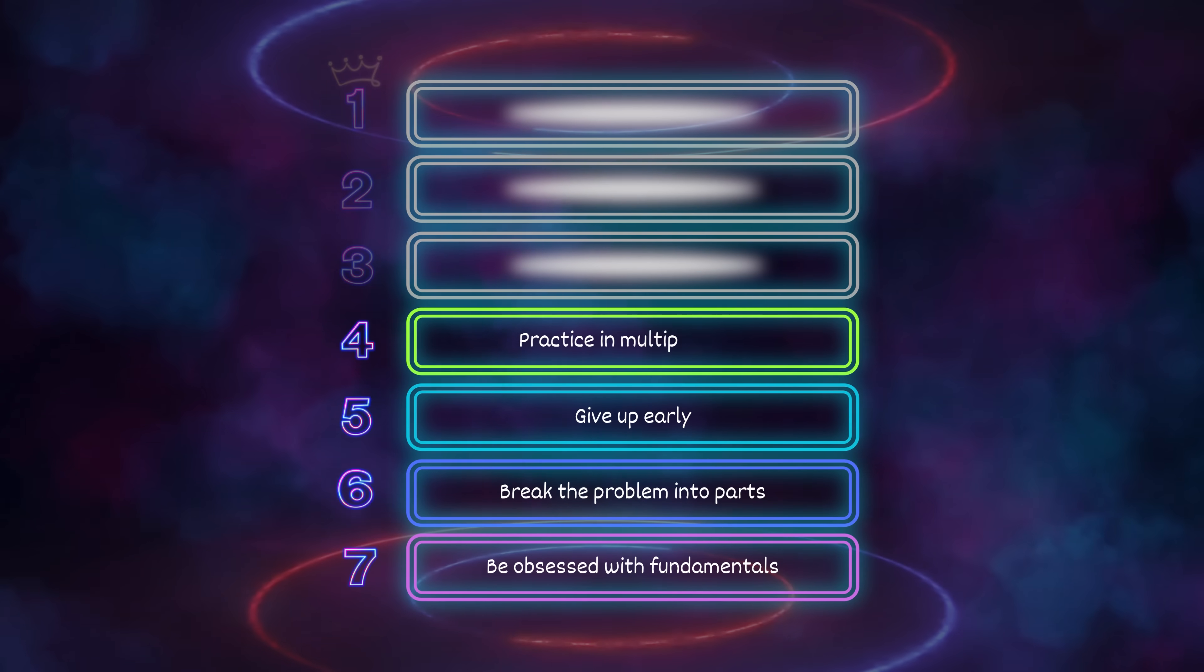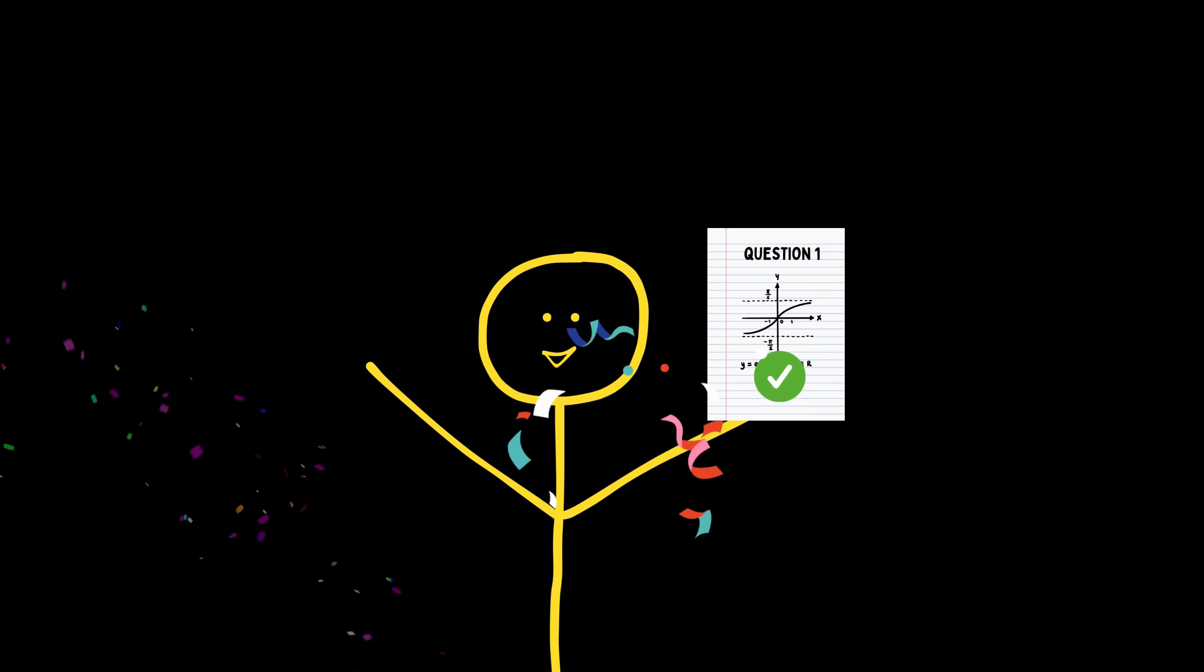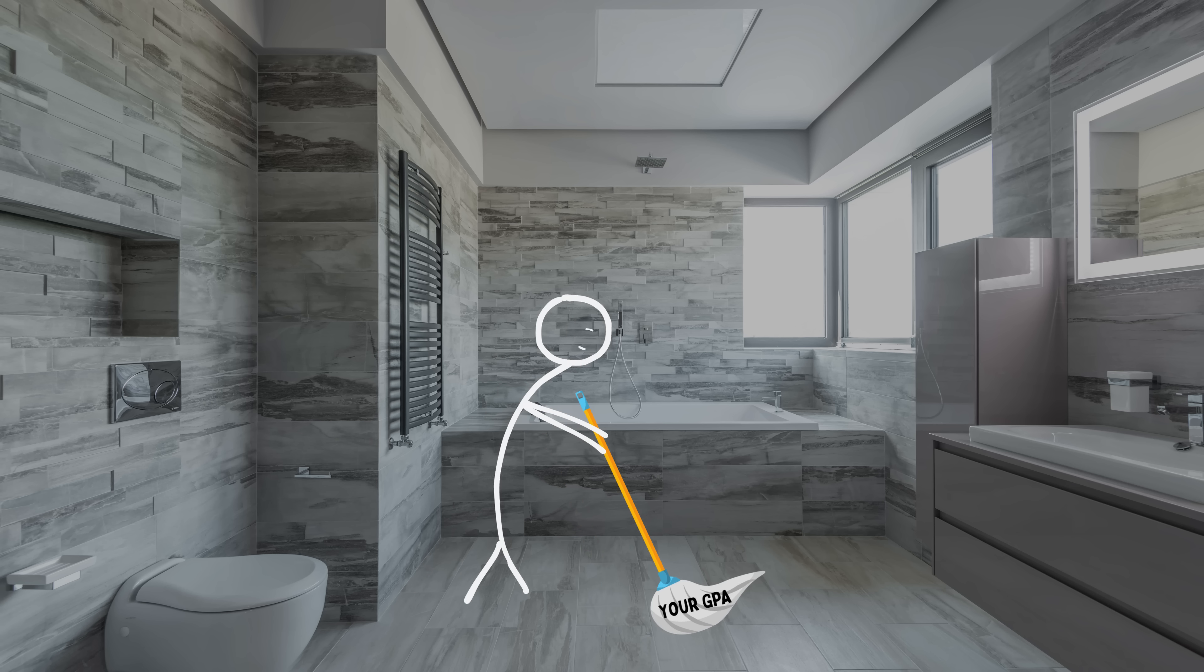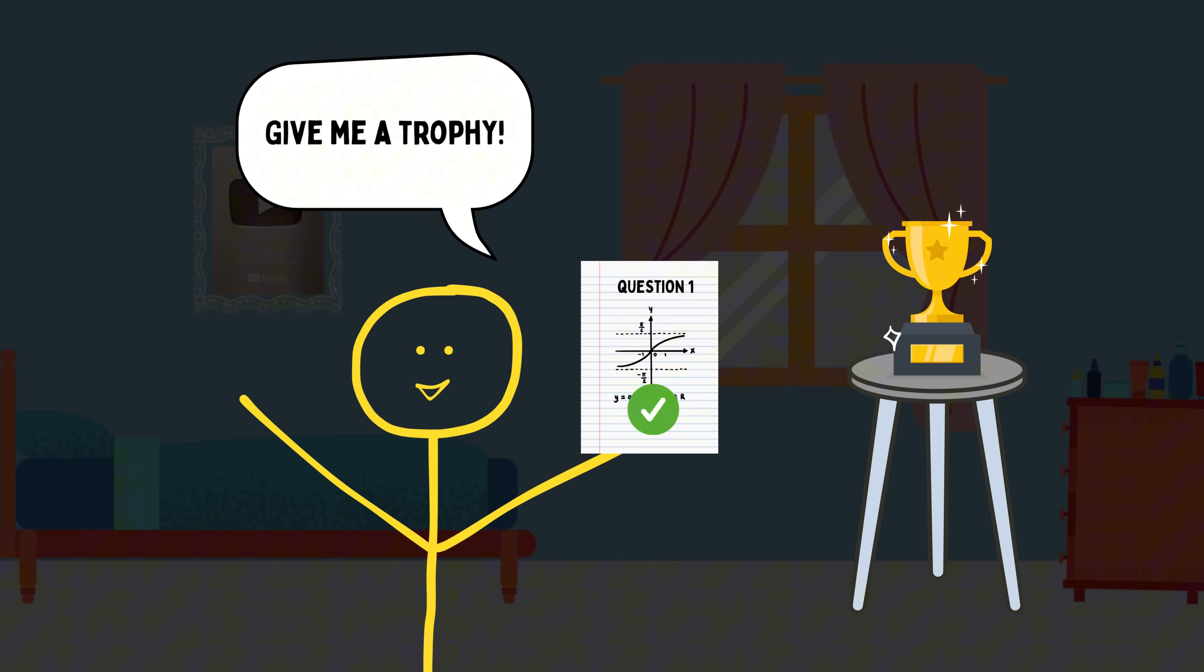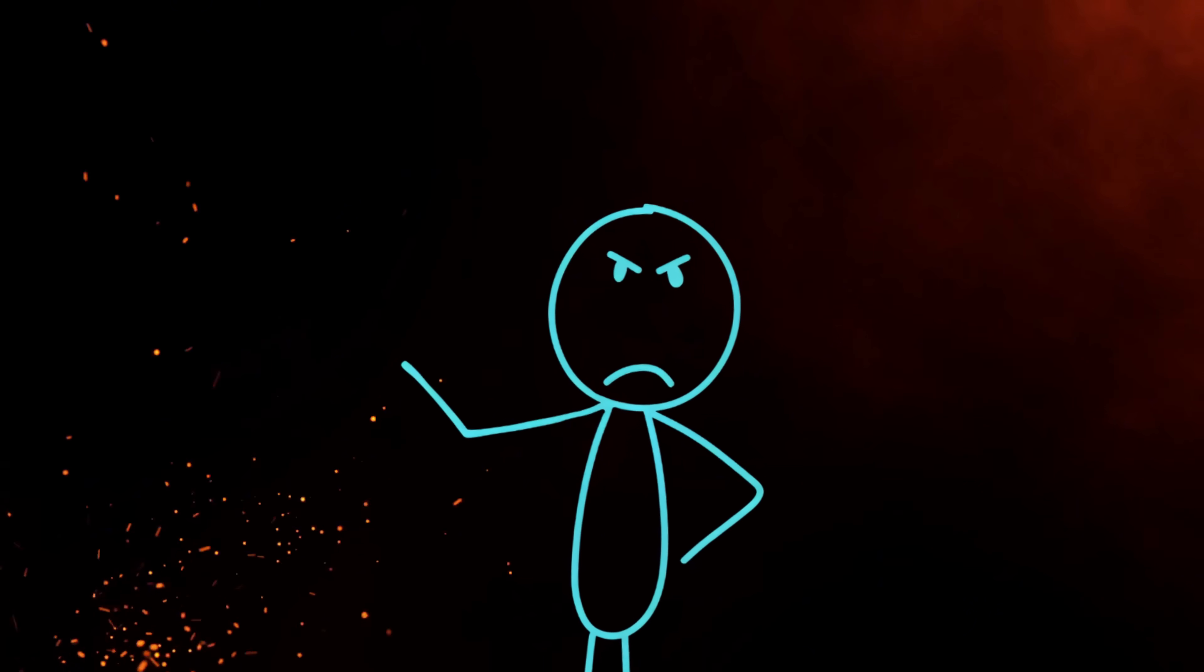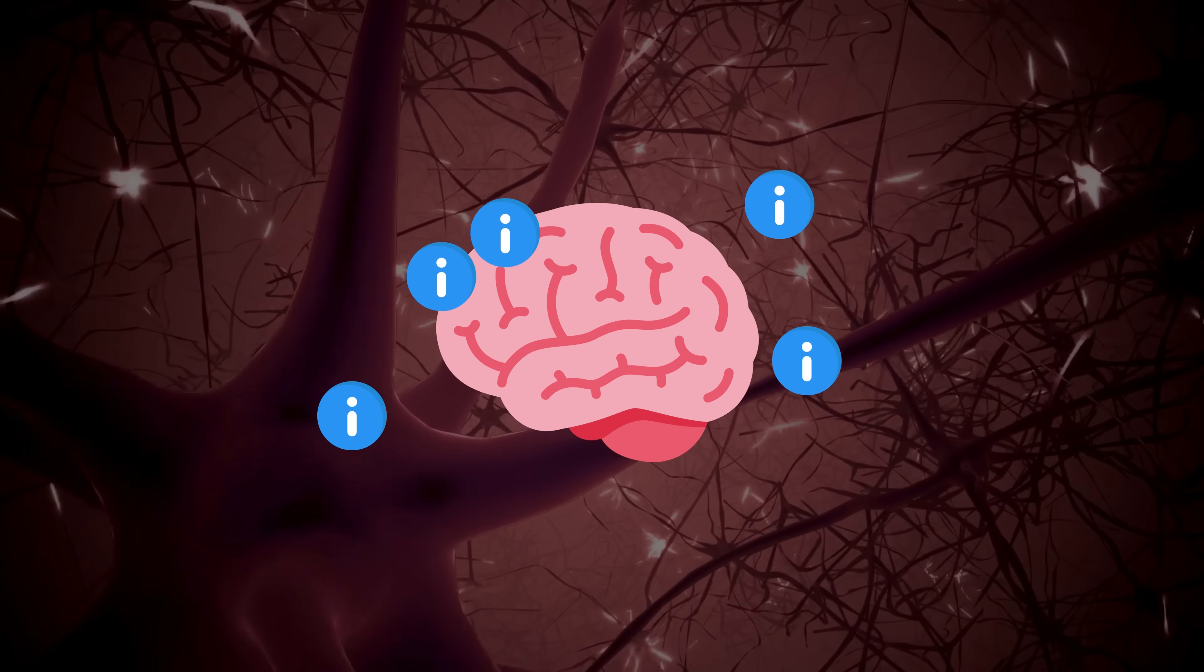Number 4: Practice in multiple ways. Oh wow, you solved one math problem and now you think you're Einstein. Sit down, idiot. Real students like the Asian ones mopping the floor with your GPA don't just solve a problem once and pat themselves on the back like they deserve a trophy. No. They solve the same damn problem three different ways. Why? Because they're not trying to just get the right answer. They're trying to make sure the concept is tattooed on their brain forever.